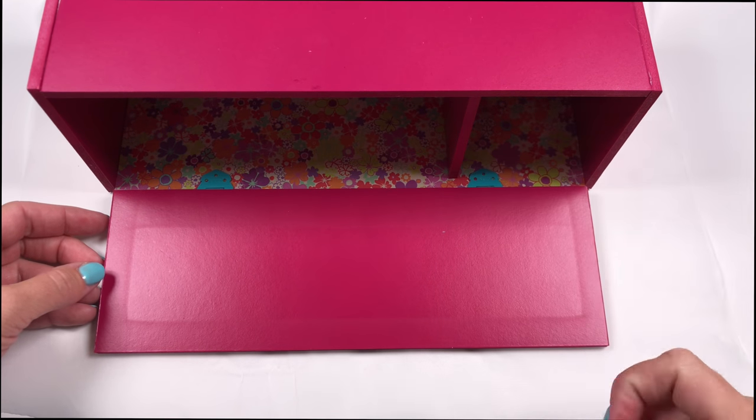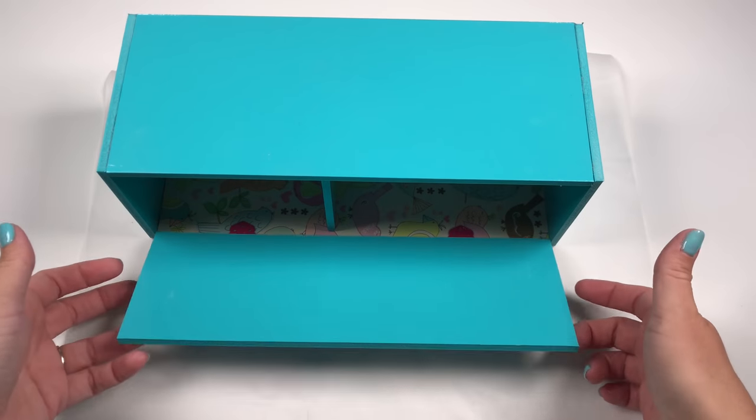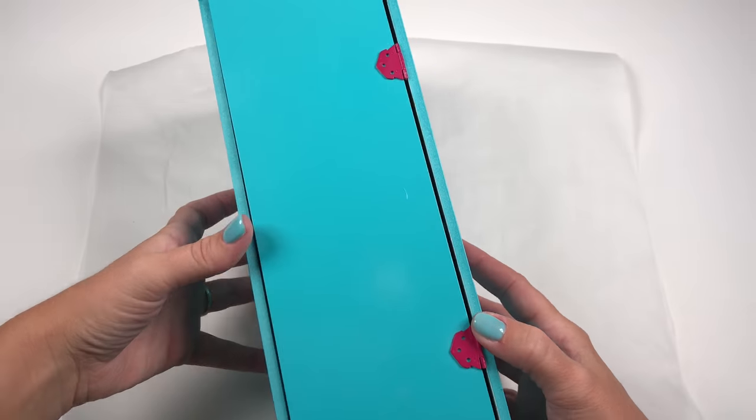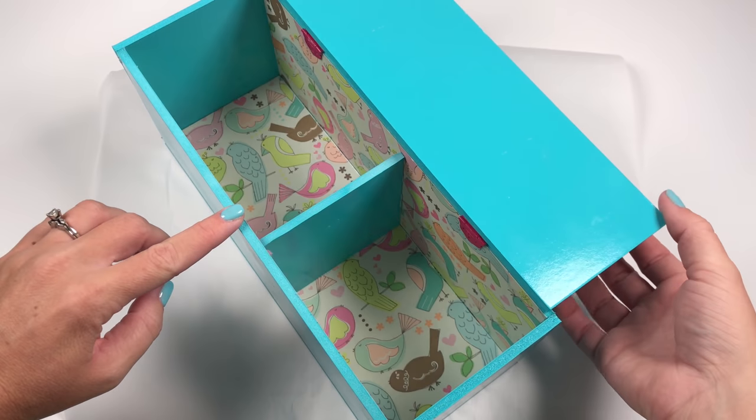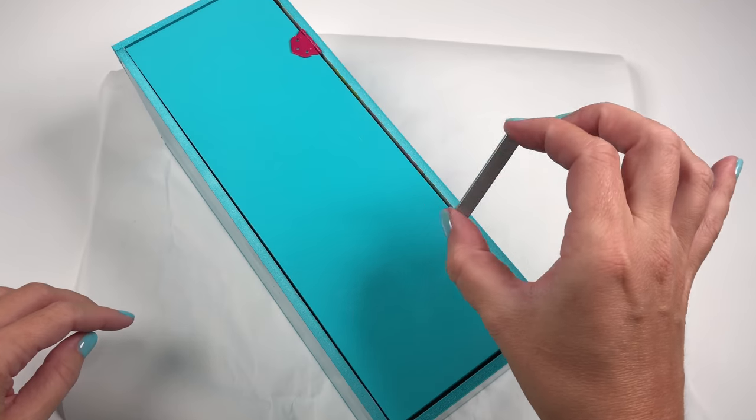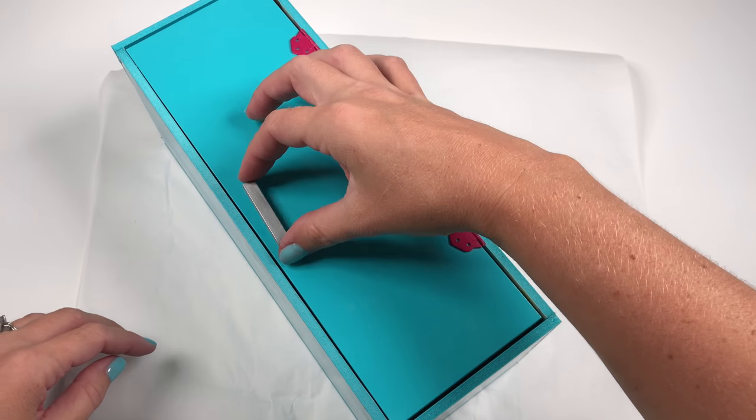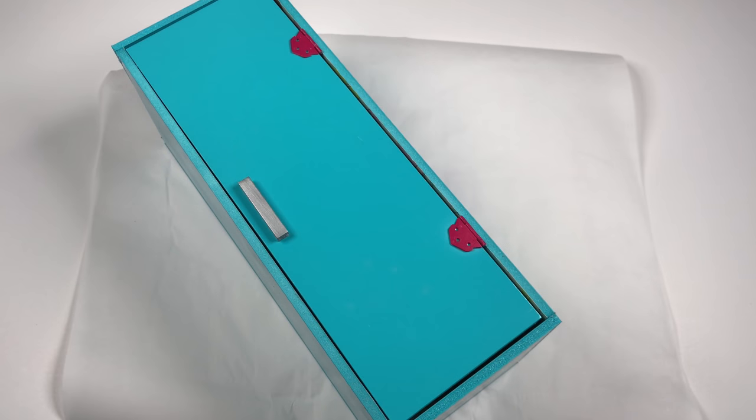If you don't have these hinges, you can use a method I've shown you in the past by using duct tape. Place it on the inside of the locker door and the locker, and it will work just like these hinges. Now cut a scrap piece of foam board or craft foam for your locker handle.